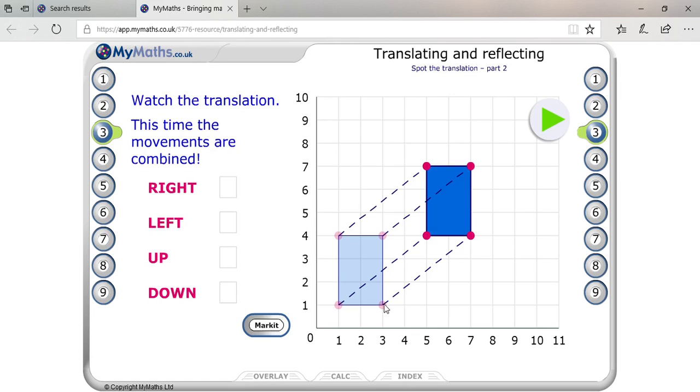You can see one point here: one unit, two units, three units, four units, and one unit, two units, three units. Okay, so four units right and three units up. Okay, four units right and three units up.